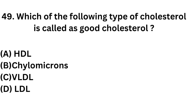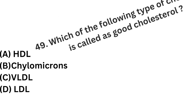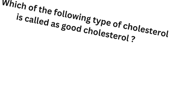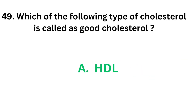Question number 49: Which of the following type of cholesterol is called good cholesterol? Option A: HDL. Option B: Chylomicrons. Option C: VLDL. Option D: LDL. The correct answer is option A, HDL. High density lipoprotein is known as good cholesterol.